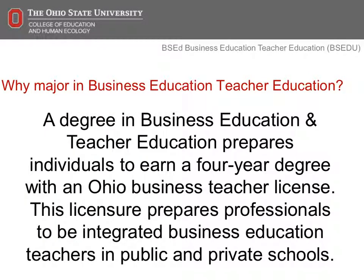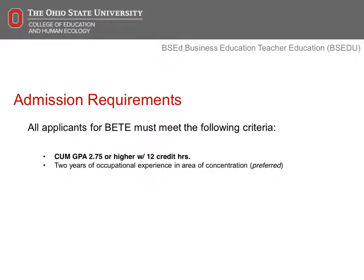A degree in Business Education and Teacher Education prepares individuals to earn a four-year degree with an Ohio Business Teacher License. This license prepares professionals to be integrated business education teachers in public and private schools. Applicants must have a cumulative GPA of 2.75 or higher and complete 12 credit hours. Two years of occupational experience in the area of concentration is also preferred. All applicants should schedule an individual meeting with drzirkle.6 at osu.edu to learn more about the program and discuss requirements.